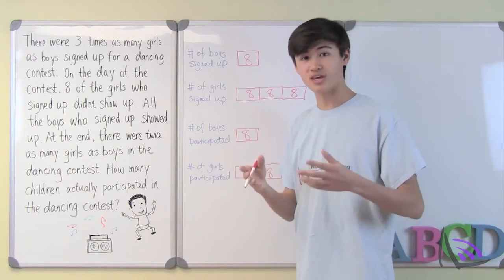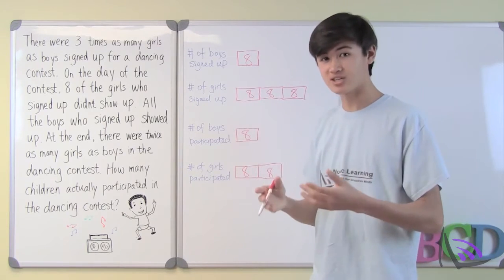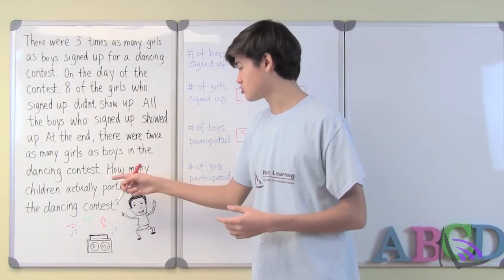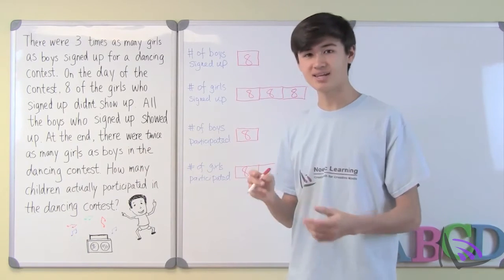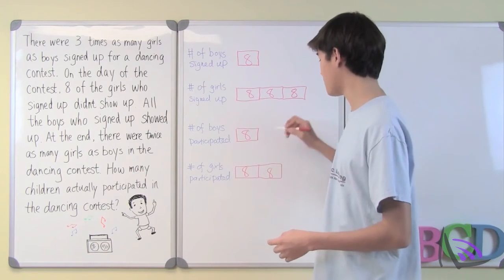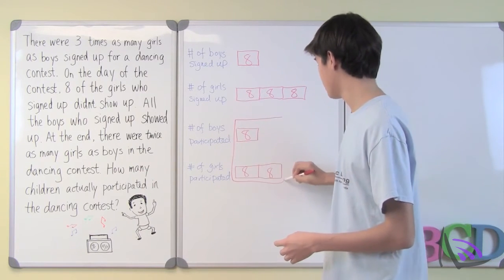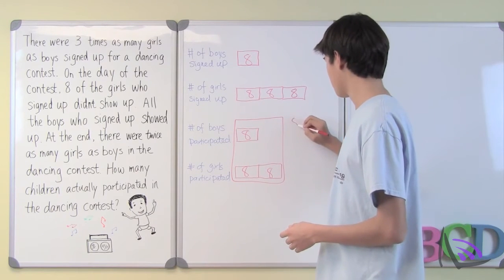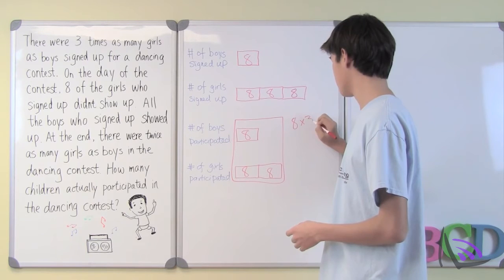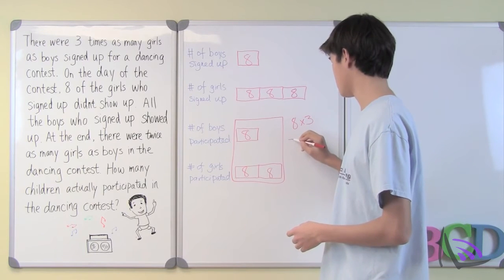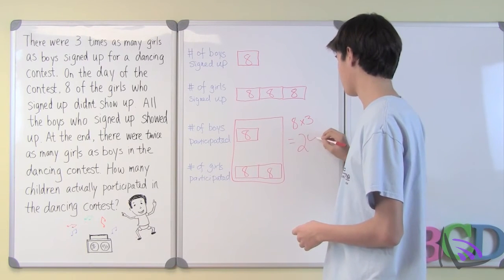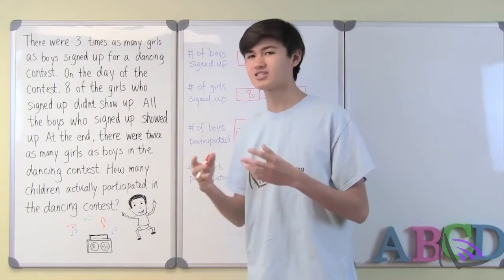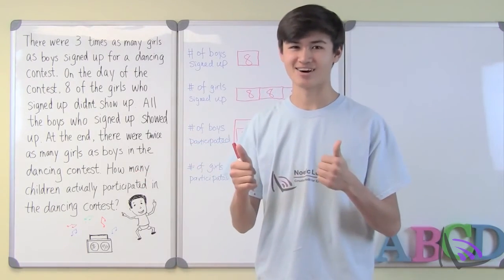Now that we have solved all the unknowns, we can look at the question. The question says: how many children actually participated in the dancing contest? And we can find that right here. Since there are three bars of eight, we can find that number by eight times three, which is equal to 24. So there are 24 kids who actually participated in the dancing contest.